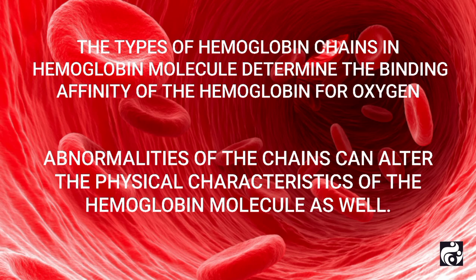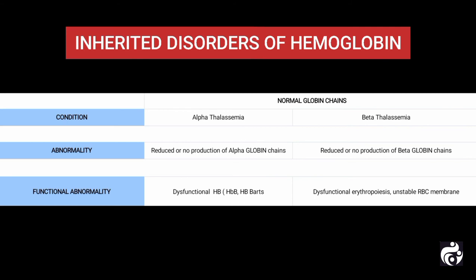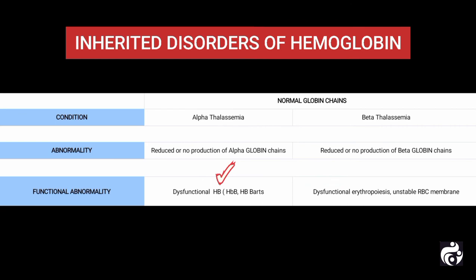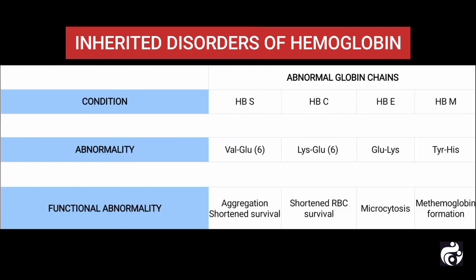Abnormalities of the chains can alter the physical characteristics of the hemoglobin molecule as well. Let's take a look at this table of all the inherited disorders of hemoglobin. In the case of normal globin chains, if alpha thalassemia or beta thalassemia occurs, then reduced or no production of alpha and beta globin chains occurs respectively, and dysfunctional hemoglobin or dysfunctional erythropoiesis occurs.